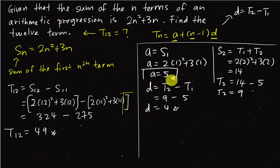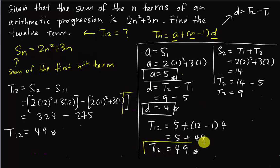So then I will have a, I will have d, and I have n also because I want to find the 12th term. So T12 = a (which is 5) plus n (which is 12) minus 1, times d (which is 4). So I will get 5 + 11 × 4 = 44, so 5 + 44 = 49. And you will realize that both of them will have the same answer. T12 = 49.